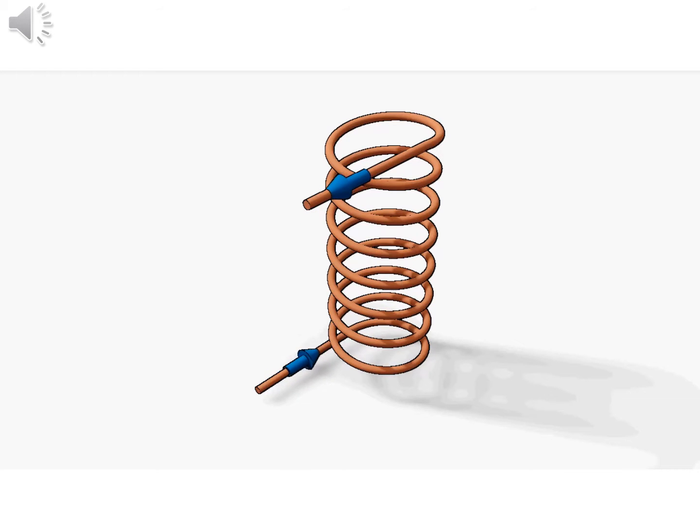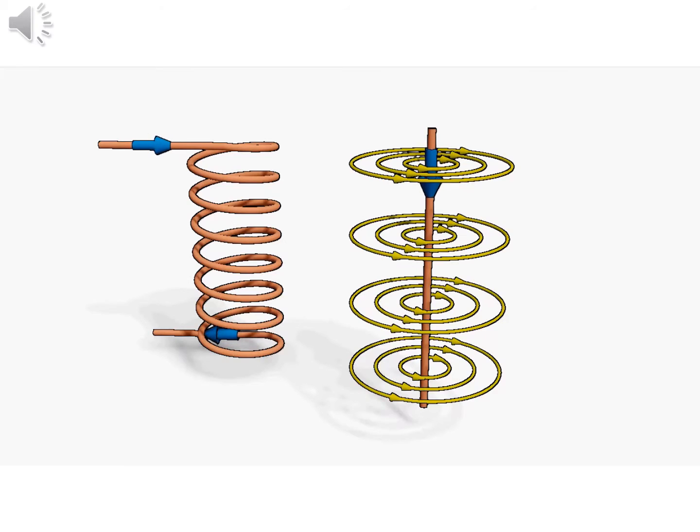Such a fluctuating magnetic field can easily be produced by a coil and an alternating EMF system. A current carrying conductor produces a magnetic field around it. The magnetic field produced by a coil will be as shown in the figure.